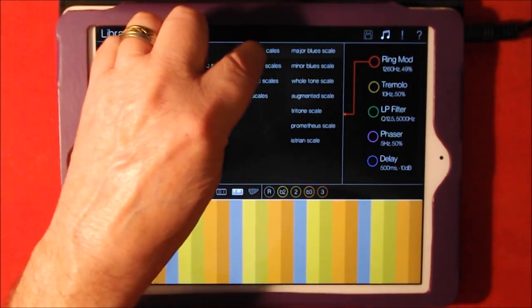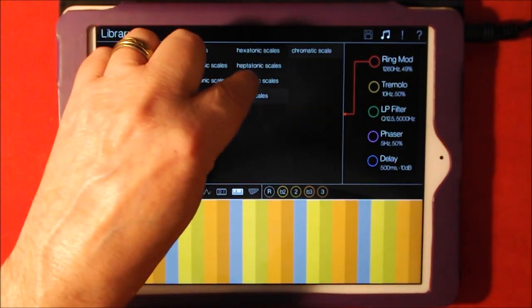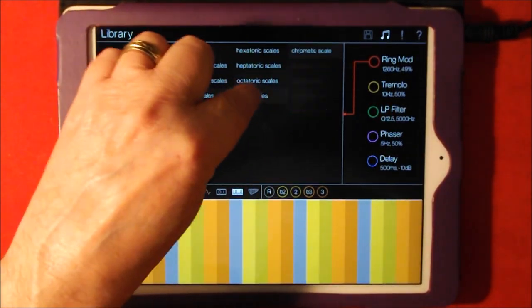And if we go to say, other scales here, we can choose some different scales here, or hexatonic scales, and it will single those out. Or those. Or those. So for instance, whole tone, a whole tone is pretty cool if you find whole tone.